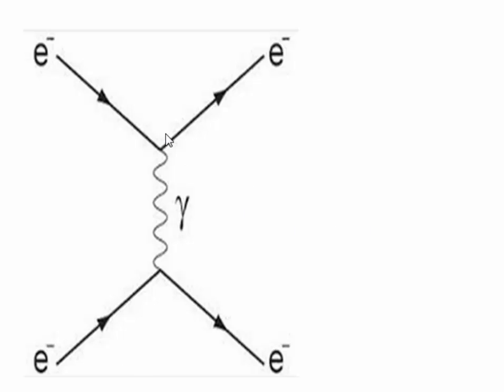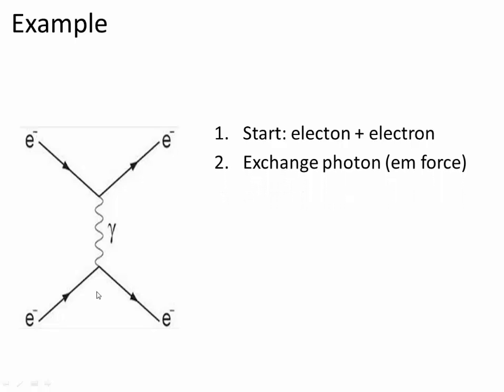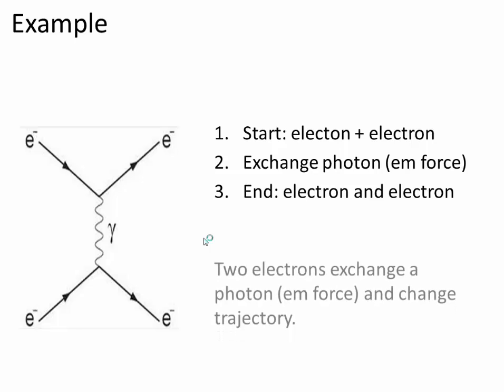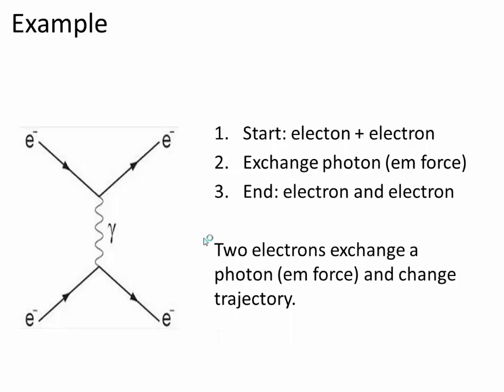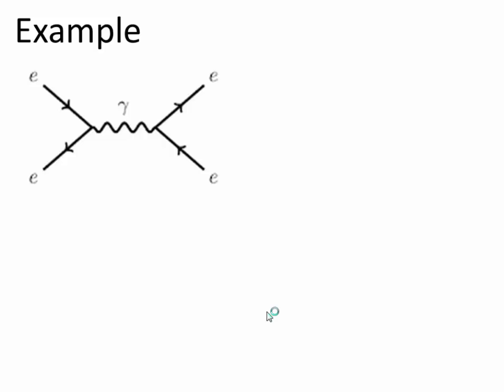So what do we have here? We start with an electron and another electron. In the middle we have an exchange photon which mediates the electromagnetic force, and we end up with two electrons. This is the simplest of the Feynman diagrams. What basically happens is that two electrons exchange a photon via the electromagnetic force and they change their trajectory.